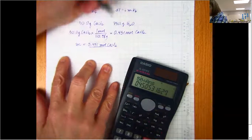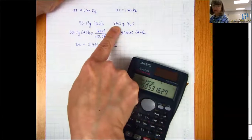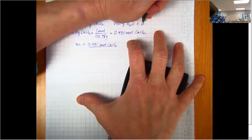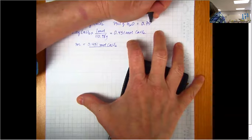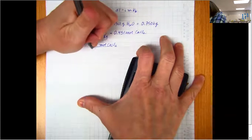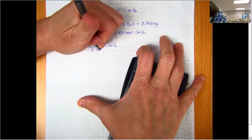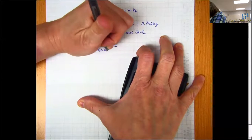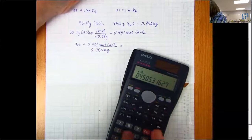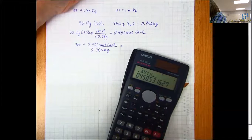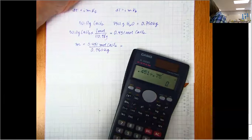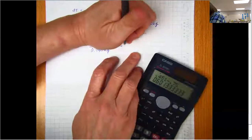So that gives me 0.451 moles of calcium chloride divided by my water in kilograms, so 750 grams, if I move my decimal three places to the left, is 0.750 kilograms. So I find out that my molality is 0.601.